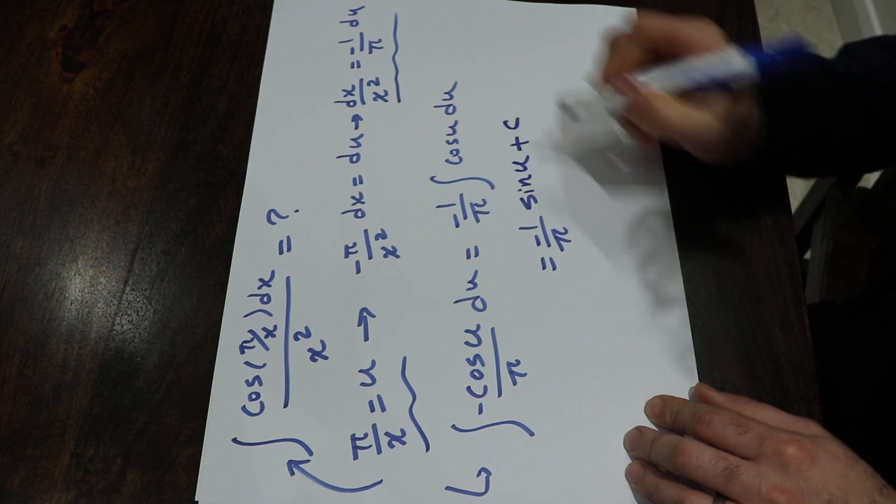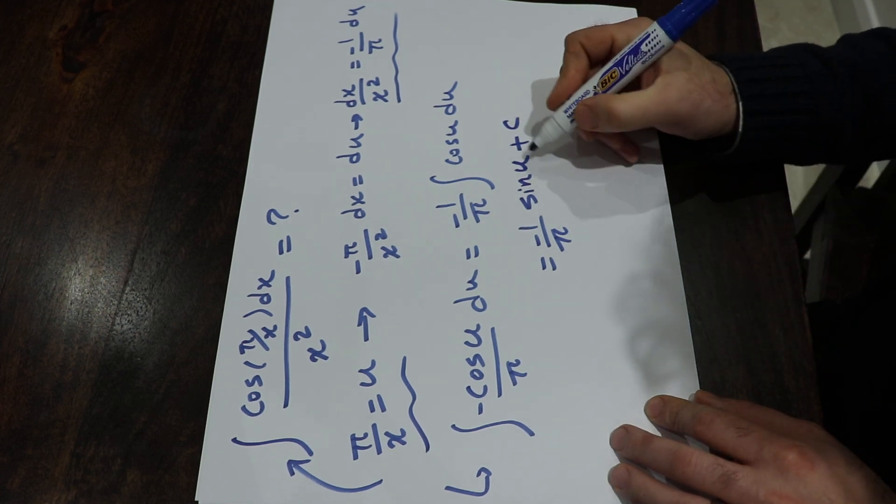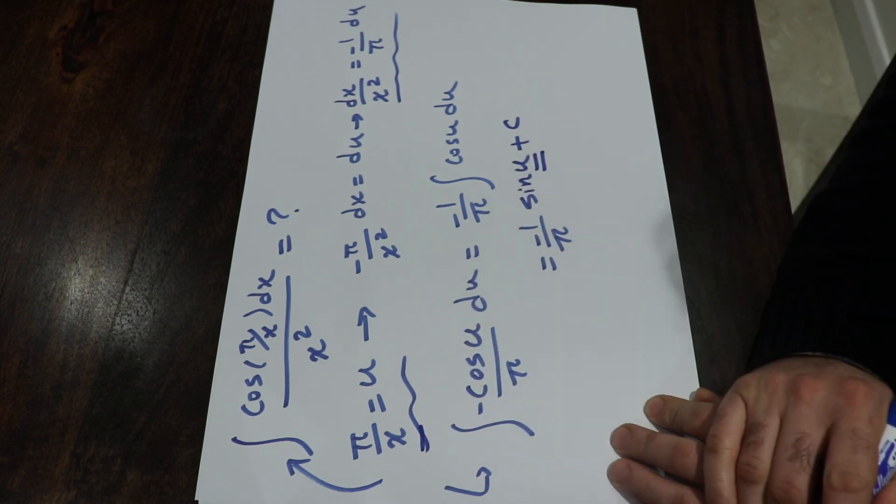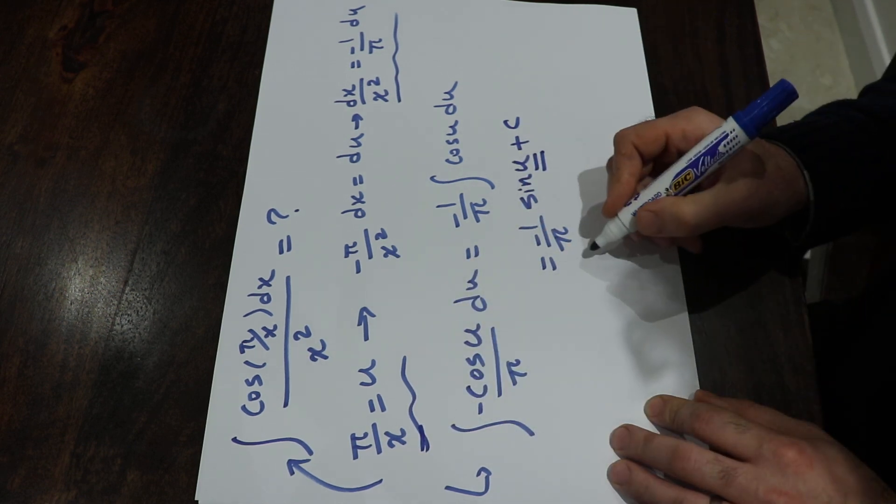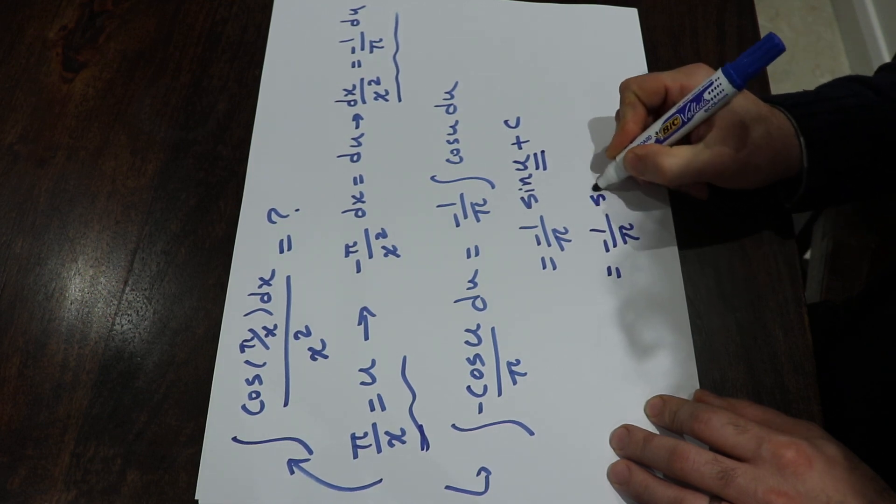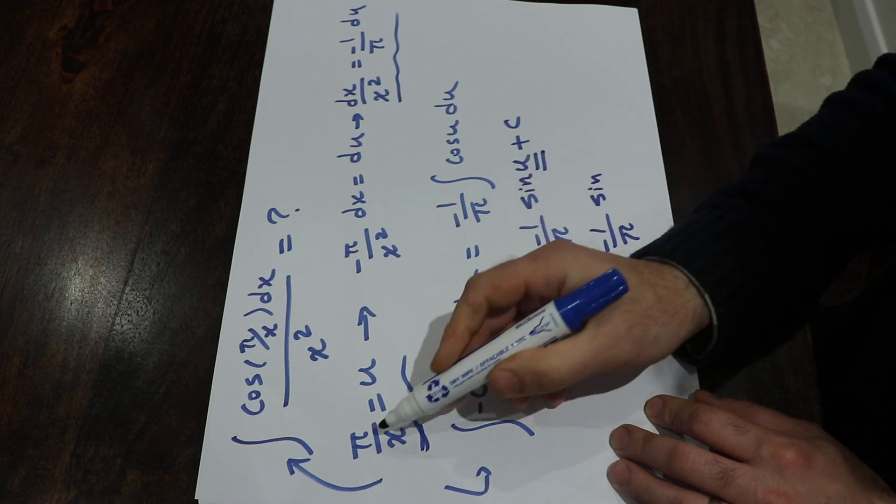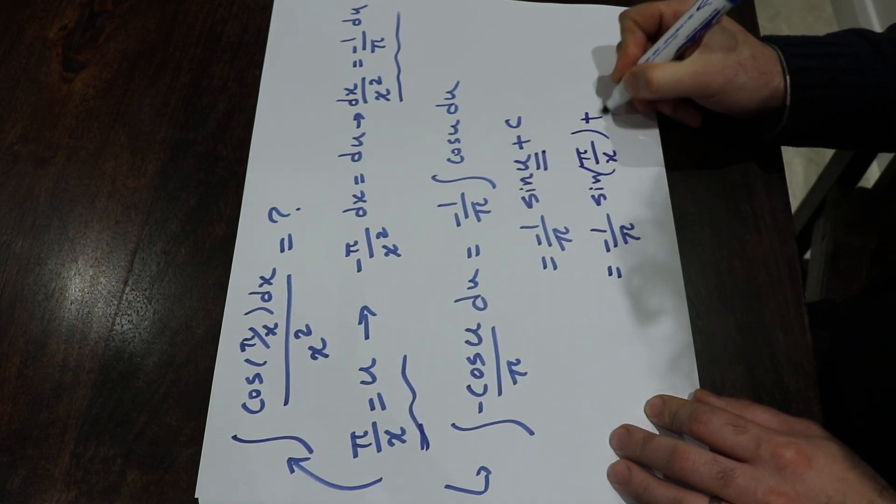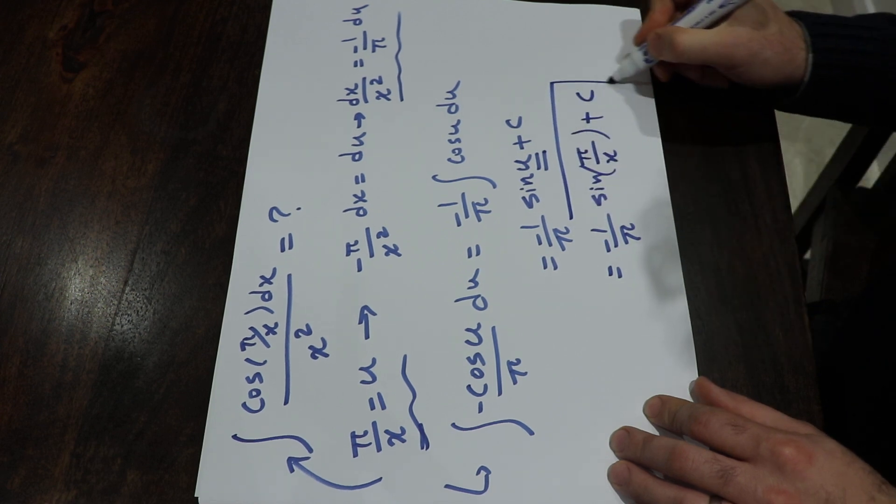Plus the c, that is the constant of integration. Here all you need to do is now to substitute the u with this function that you defined at the beginning of the integral. So that will be equal to minus 1 over pi times sine, instead of u you put pi over x plus c, and that is the solution to the integral.